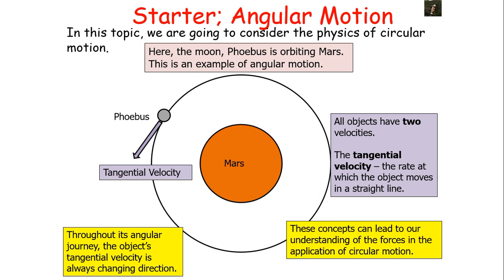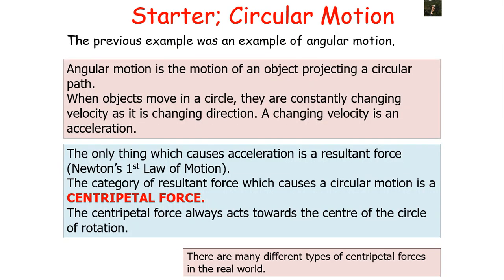These concepts lead to our understanding of the forces in circular motion. Angular motion is the motion of an object projecting a circular path. When objects move in a circle they are constantly changing their tangential velocity as it is changing direction, so this change in velocity is an acceleration. The only thing that causes an acceleration is a resultant force, from Newton's first law of motion. The category of resultant force which causes circular motion is what we call a centripetal — or as American people tend to say, centripetal — force.